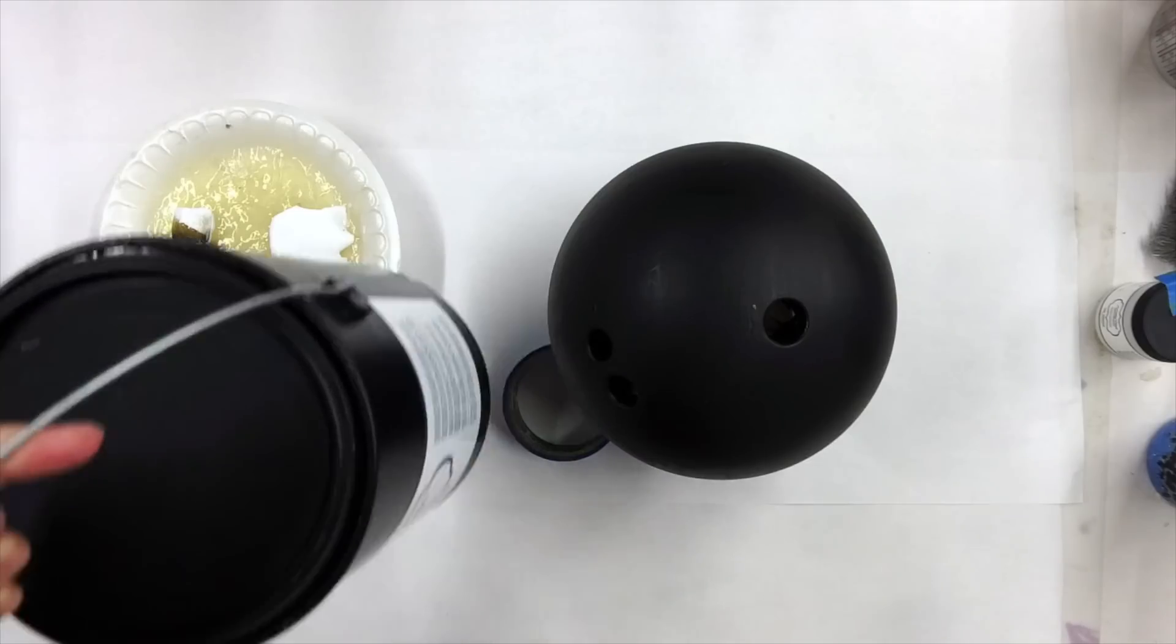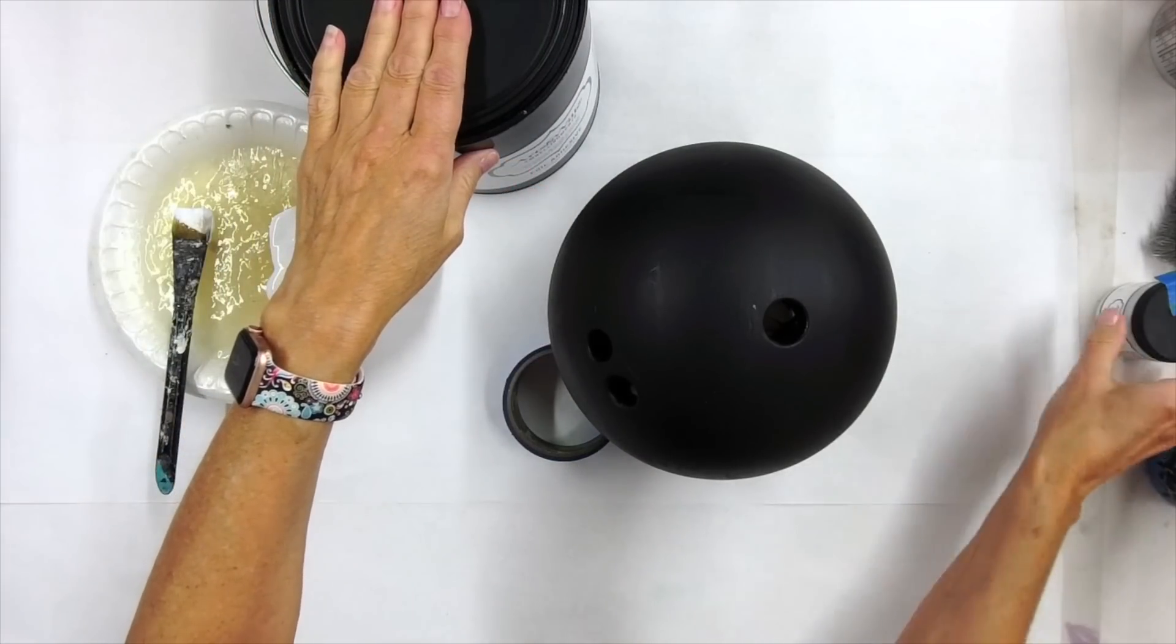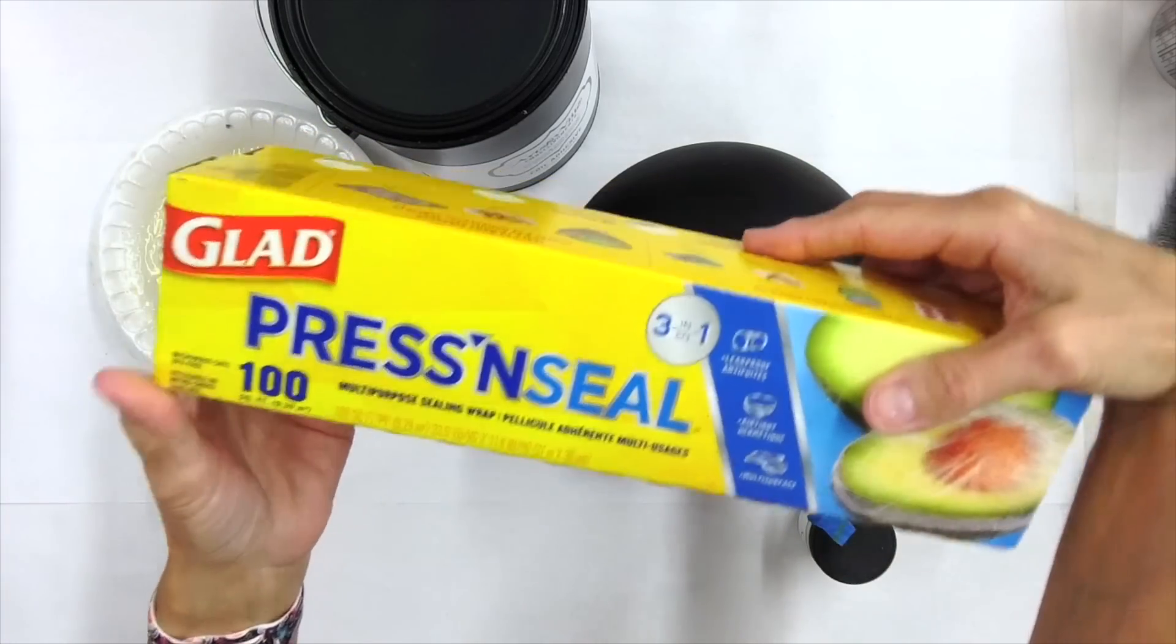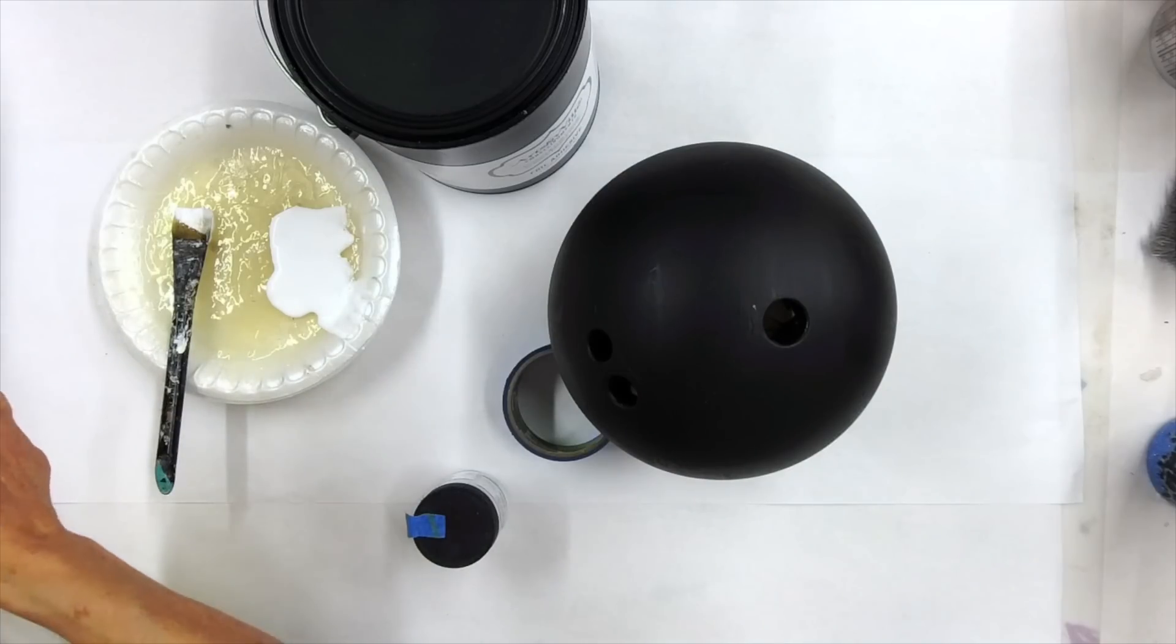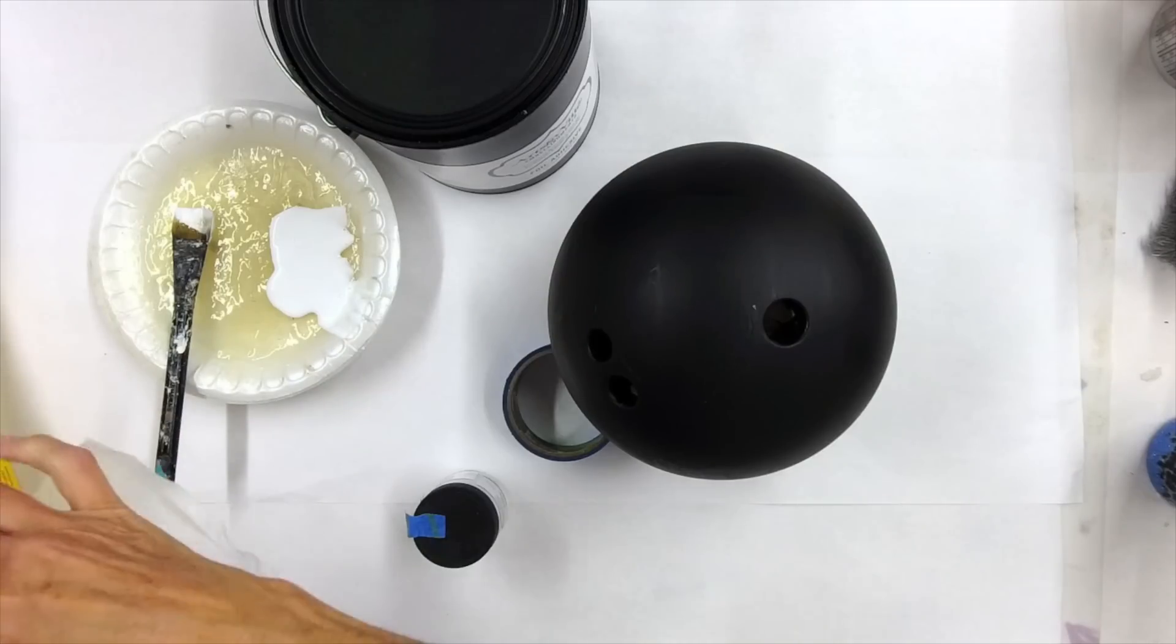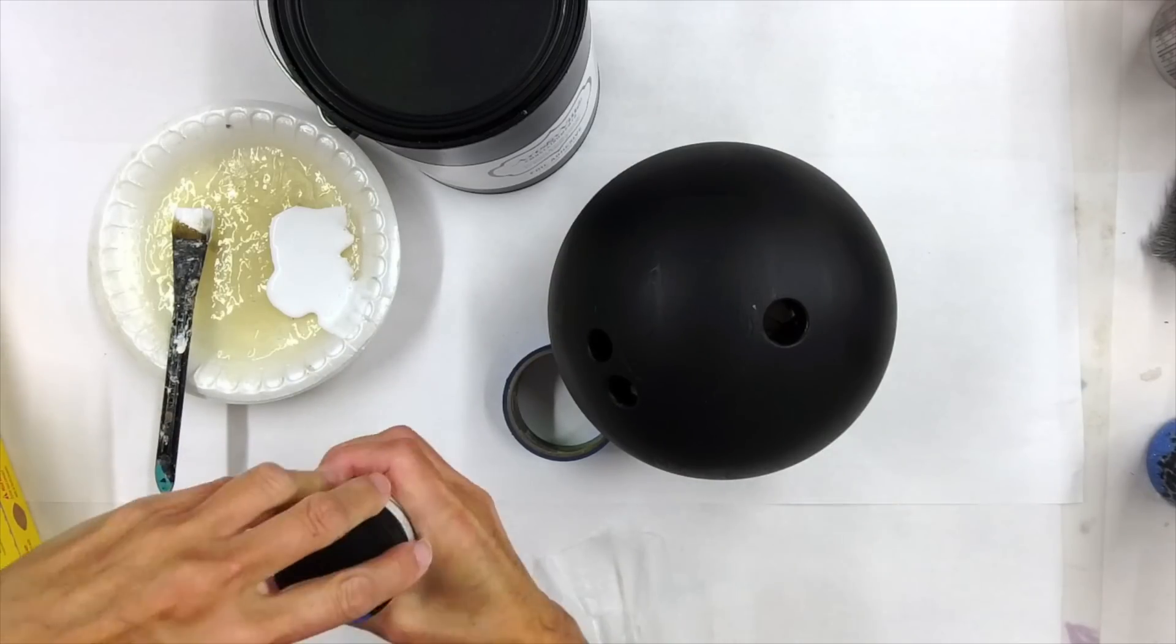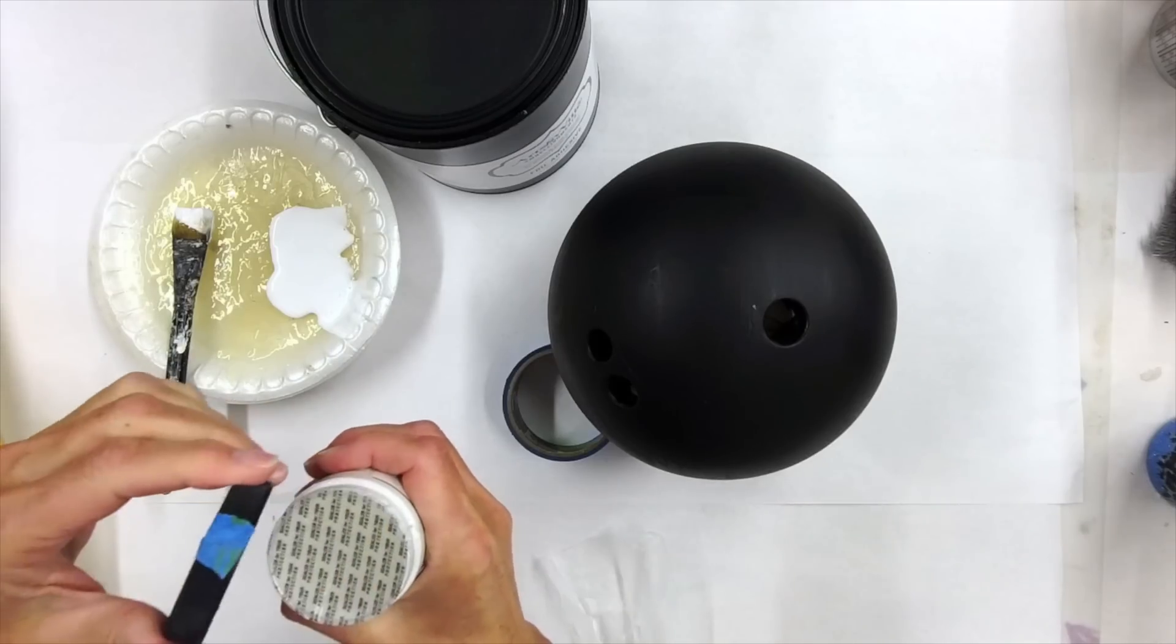A couple little tips when working with foil adhesive. It is not a bad idea to grab yourself some press and seal and just put this over. Let me show you guys when you have the little jars because this stuff is so sticky that if it gets stuck on the rim, which feels like this one has, it makes it a little challenging to get off.